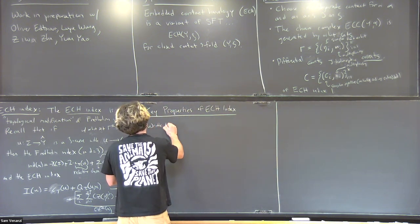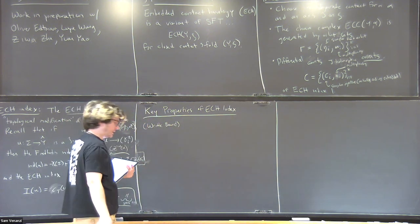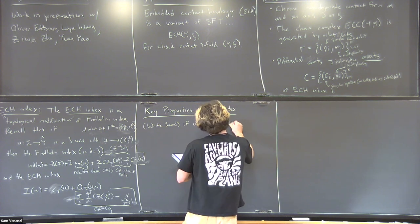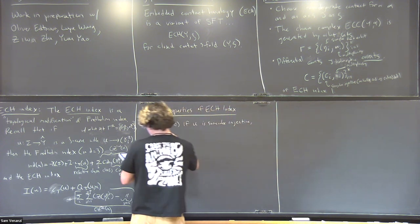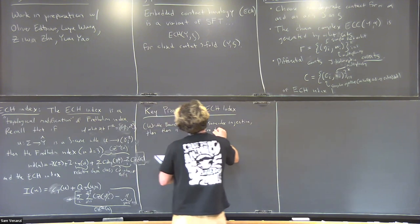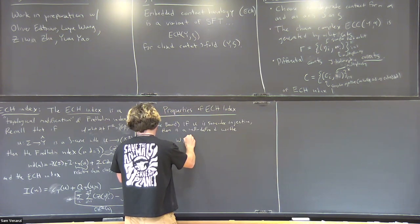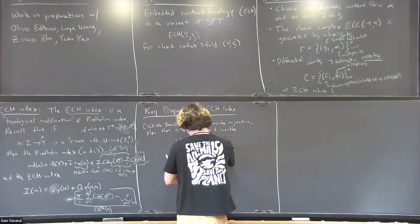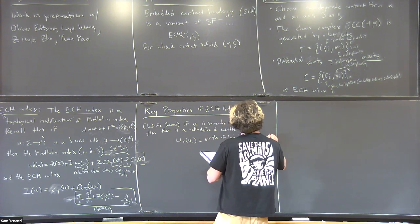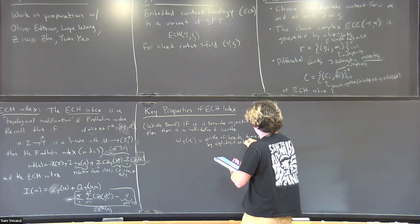Let me talk about the key properties that make ECH work. The first thing is something called the writhe bound. This is about the Conley-Zehnder term in the ECH index. If U is somewhere injective, there is a well-defined writhe of U, which is roughly speaking the writhe of the braids traced out by the cylindrical ends.